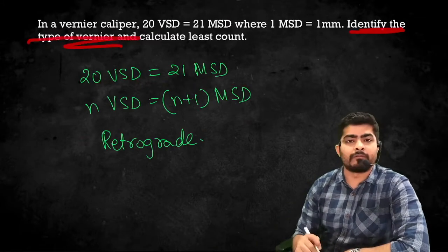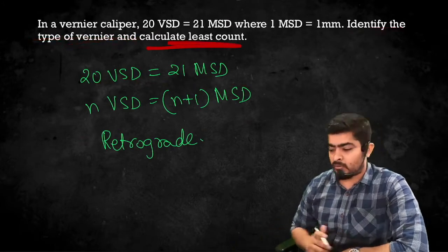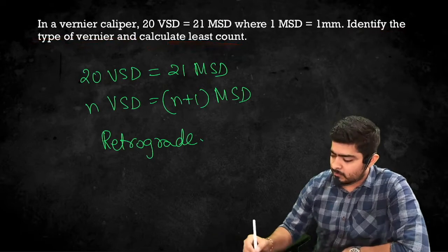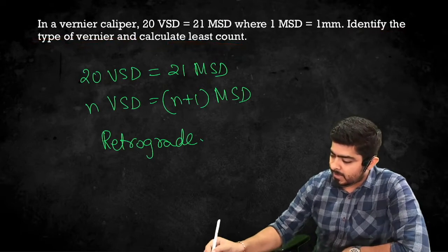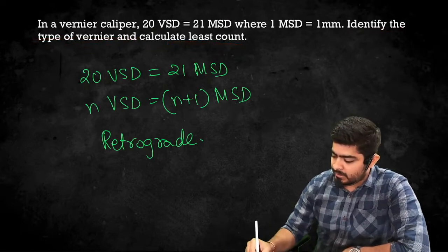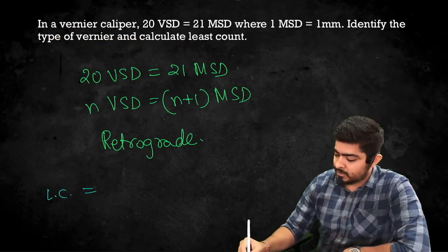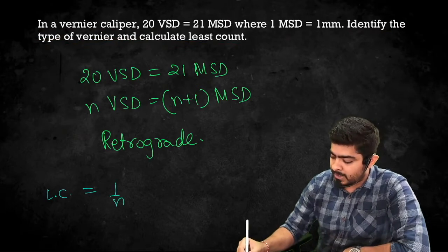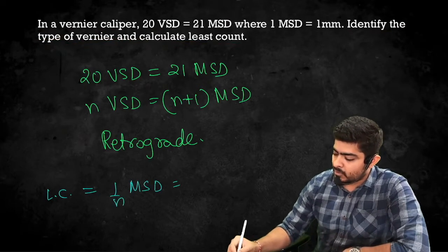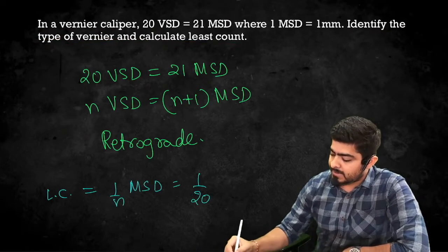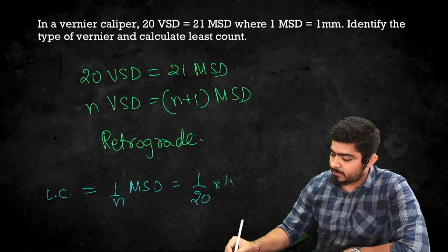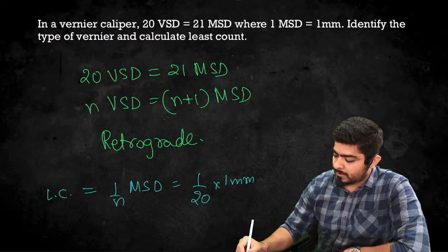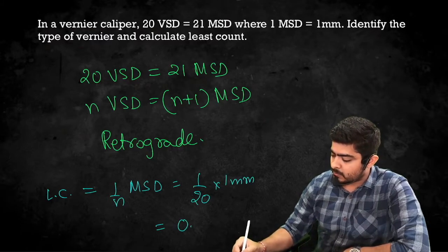So the type here is a Retrograde Vernier. For the Least Count of a Retrograde Vernier Caliper, it is 1/N × MSD. With N = 20 and MSD = 1 mm, the Least Count = 1/20 = 0.05 mm.